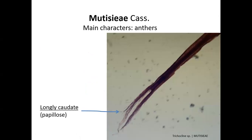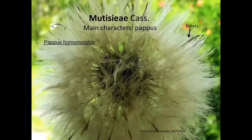The anthers are similar to the Nassauvieae — they have an apical appendage and long tails. These tails could be glabrous or papillose; in this photograph of a species of Trichocline, two papillose anthers are shown. Another character is the pappus: the pappus is homomorphic, meaning it is constituted by the same type of bristles. This distinguishes Mutisieae from Onoserideae, where the pappus is heteromorphic because it has two types of bristles.